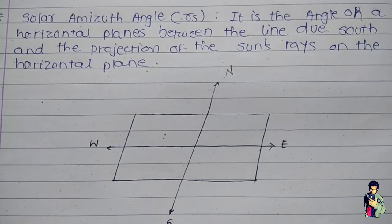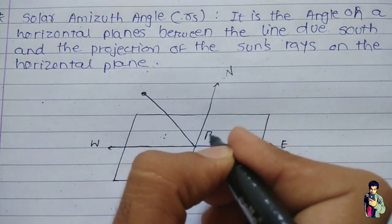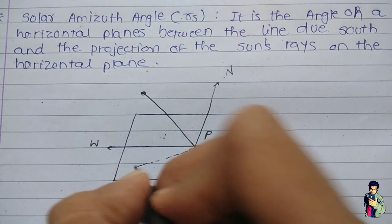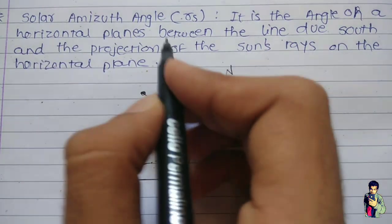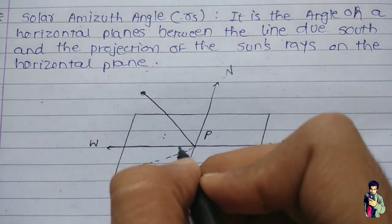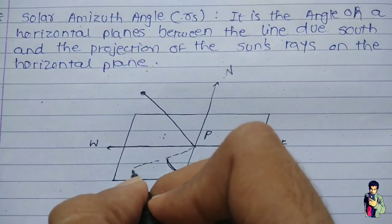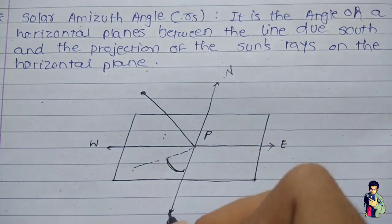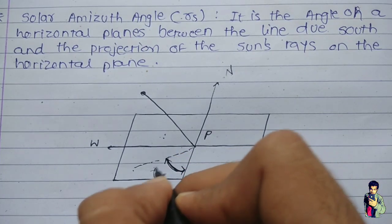Now, what is the solar azimuth angle? It is the angle on the horizontal plane between the line due south and the projection of the sun's rays on the horizontal plane. The sun's rays come towards point P, and this is the projection of those rays on the horizontal plane. The angle between the sun's rays projection and the south direction is the solar azimuth angle, denoted by gamma_s.